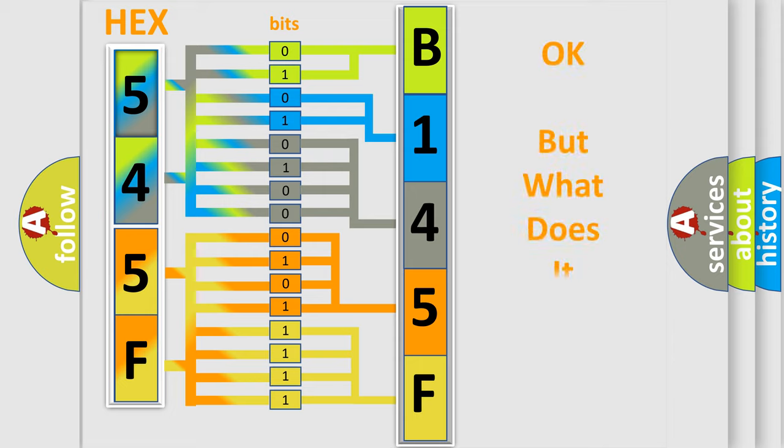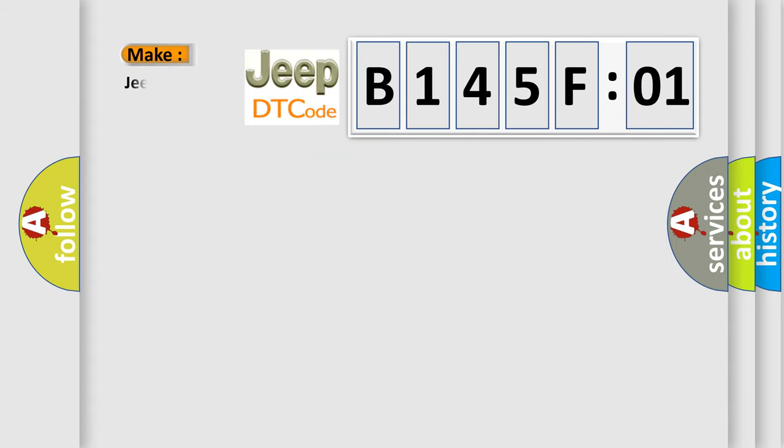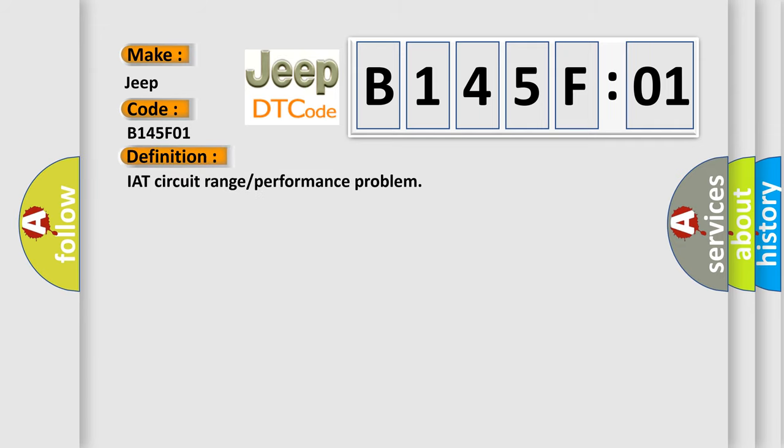The number itself does not make sense to us if we cannot assign information about what it actually expresses. So, what does the diagnostic trouble code B145F01 interpret specifically for Jeep car manufacturers? The basic definition is IAT circuit range or performance problem. And now this is a short description of this DTC code.